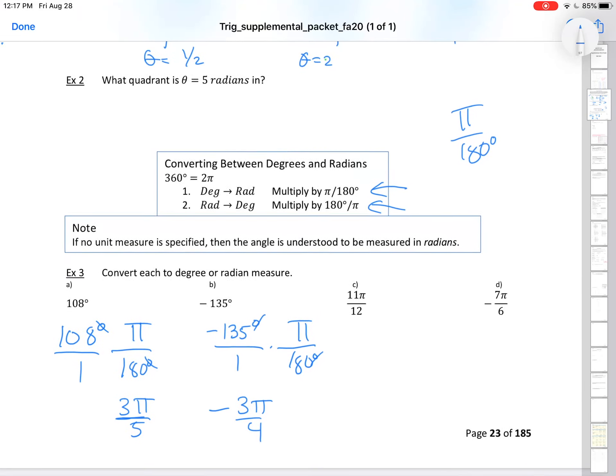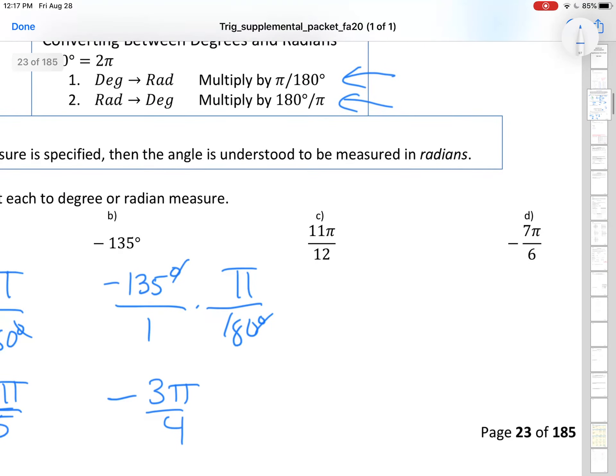Radian measure is actually preferred also from understanding where you are. So if I go to this 11π/12, now I'm converting from radians to degrees. I don't want radians, but I do want degrees. So let me put my degrees up top and my radians on the bottom. The π's cancel out and you put in a 180. If you do that division, you'll end up with 165 degrees.